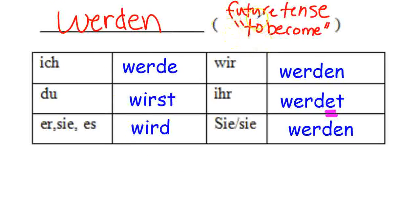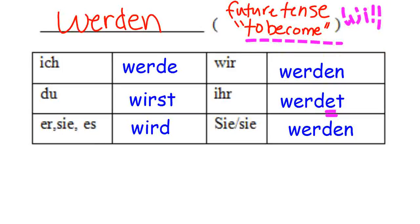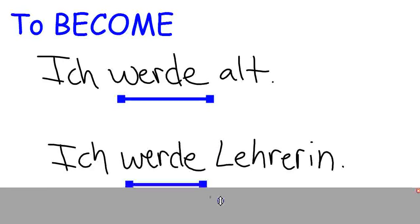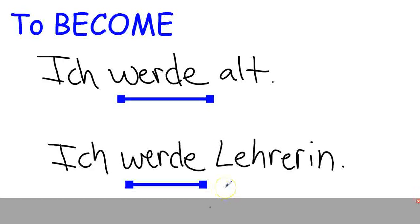In addition to forming the future tense, 'werden' also means 'to become.' For example, 'ich werde alt' means 'I am becoming old' or 'I'm getting old.' If you were studying education you might say 'ich werde Lehrerin' — I'm becoming a teacher. So 'werden' can also mean 'become.'